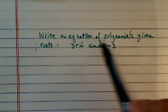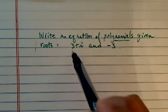We have an interesting problem here. We're asked to write an equation of a polynomial given that there's two roots here.